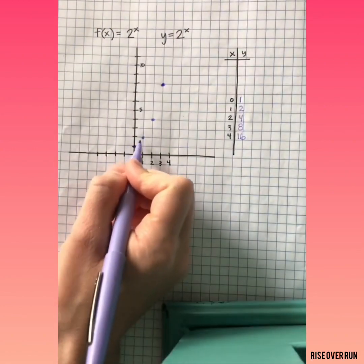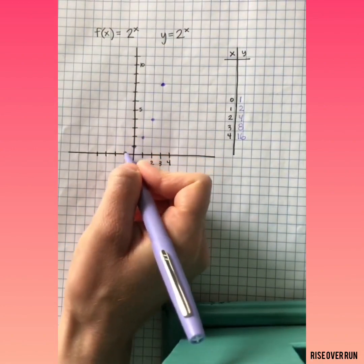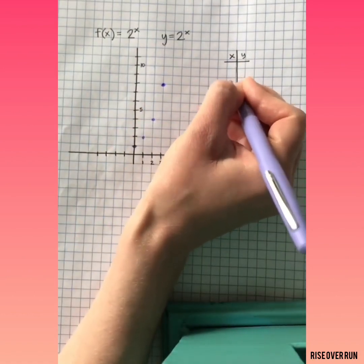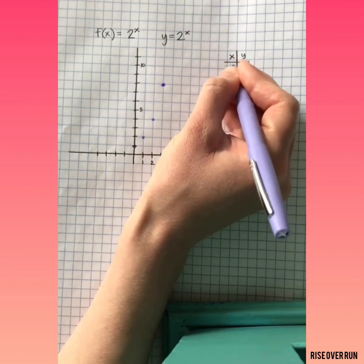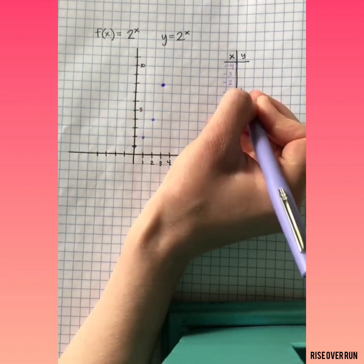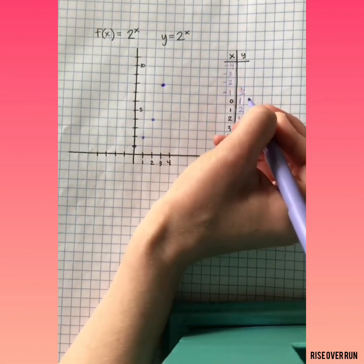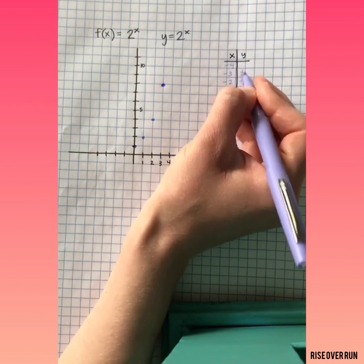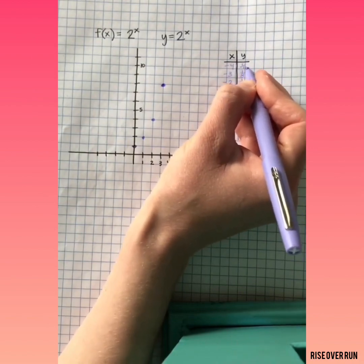These points are not in a straight line. They're curving. So let's see what happens when we use some negative numbers for x. 2 raised to the negative 1st power is 1 half, to the negative 2nd is 1 fourth, 1 eighth, and 1 sixteenth.